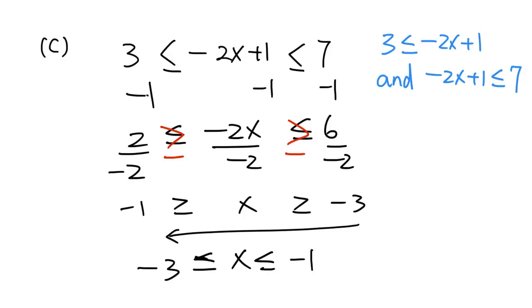So in interval notation, the solution is written as bracket negative 3, comma, negative 1, bracket — that is, the closed interval [-3, -1].